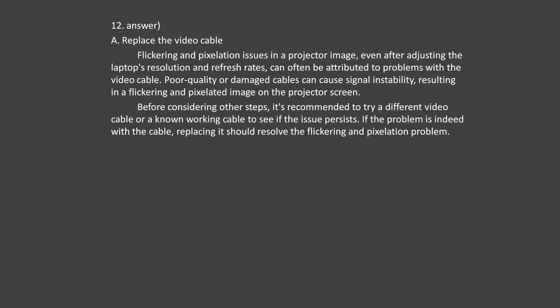Question number 33. You are adding to a dual channel system that has one 8 GB module to upgrade to 16 GB. Which one of the following do you need to confirm before you buy more RAM? Option A: The brand of the current RAM module. Option B: The speed of the current RAM module. Option C: The type of current RAM module. Option D: All of the above. Answer number 33: Option D — all of the above.